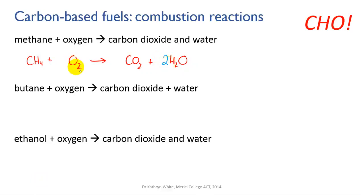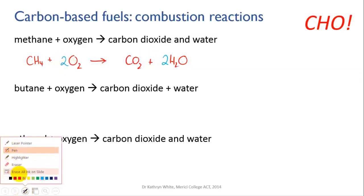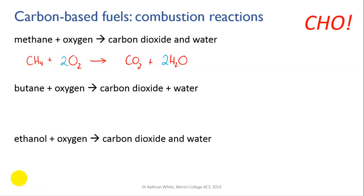Now we do the oxygen. We've got O₂ so two on the left. On the right we've got two oxygens in the carbon dioxide and one oxygen in the water, but there are two water molecules, so two there — a total of four on the right. Two on the left, four on the right, so we just need to double our number of oxygen atoms on the left.